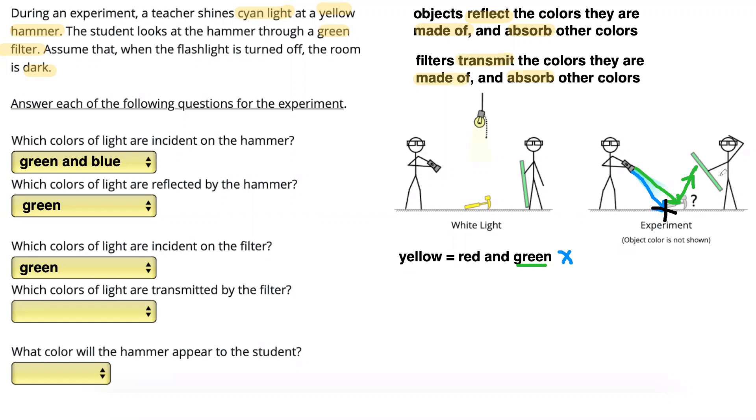Green is a primary color. So that filter is going to transmit green and absorb anything else. Since green is the only light shining onto our filter, that green light is going to travel through. So what colors of light are transmitted by the filter? Green.